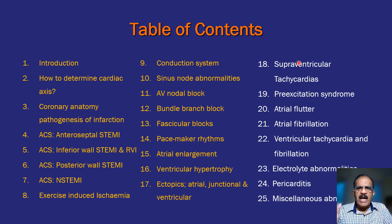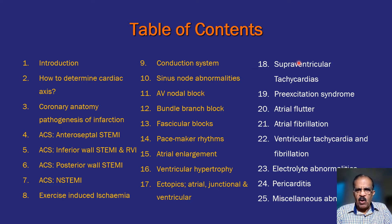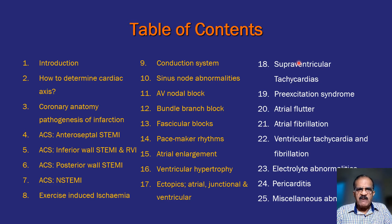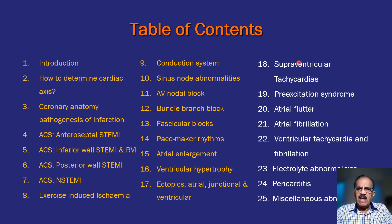The normal narrow complexes occur unless there is a co-existing or pre-existing condition — for example, if somebody has a right or left bundle branch block, there is reason to have broad complexes even in sinus rhythm. So supraventricular tachycardia will also be a broad complex in those cases, but otherwise these patients would have a narrow complex tachycardia.